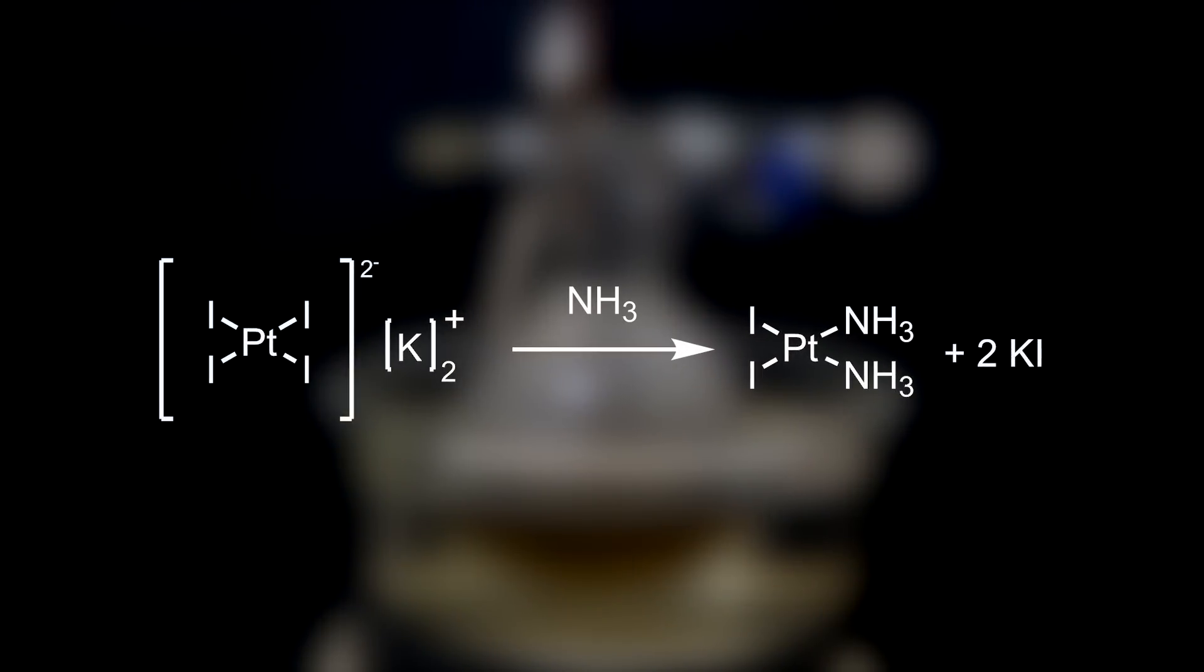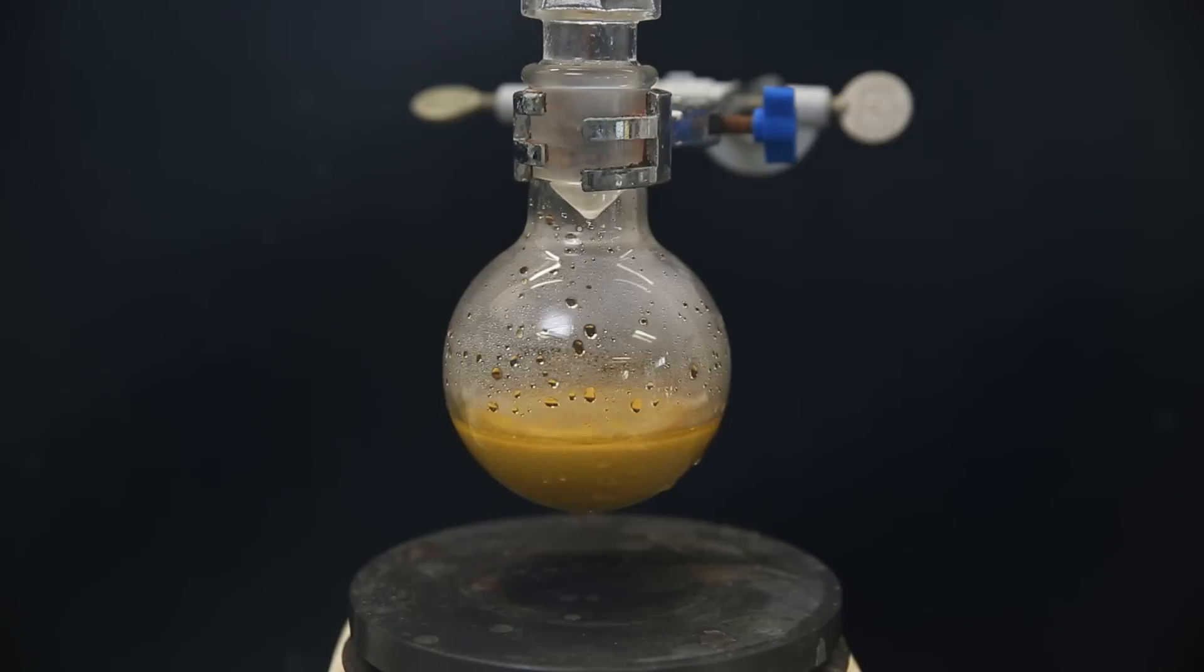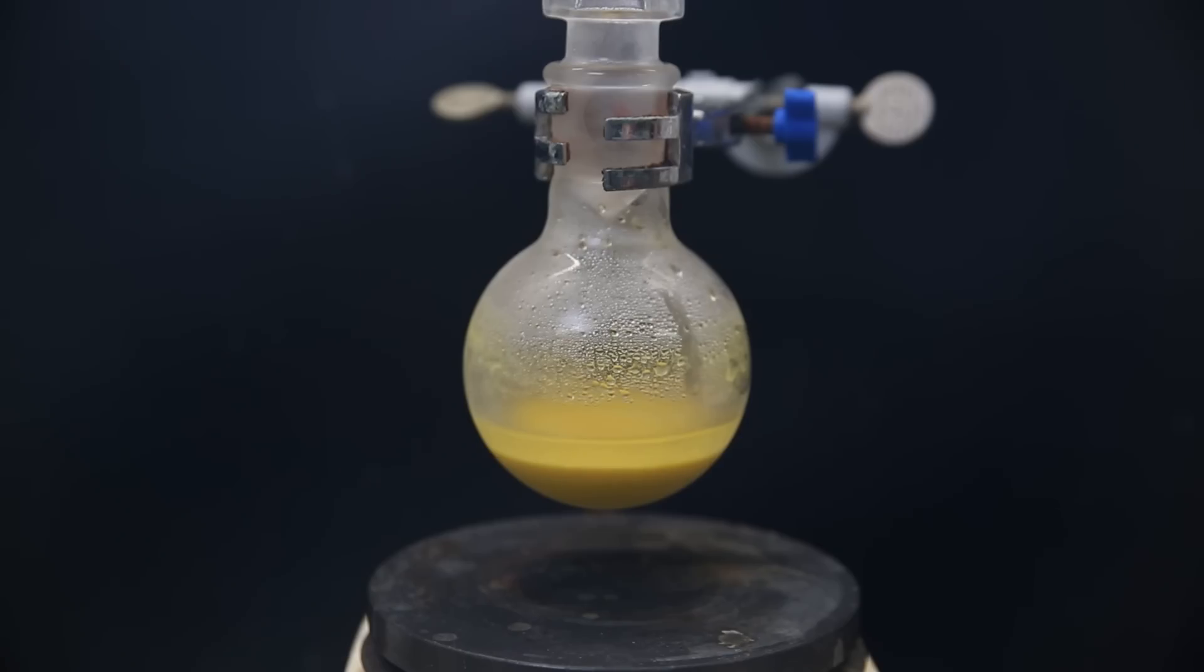In this reaction, ammonia coordinates to the platinum atom in the cis position and kicks off potassium iodide to form cis-diammine-diiodoplatinum too. I then take it out of the water bath and set it in the fridge to make sure it all precipitates out.